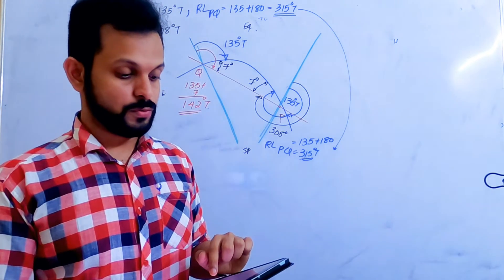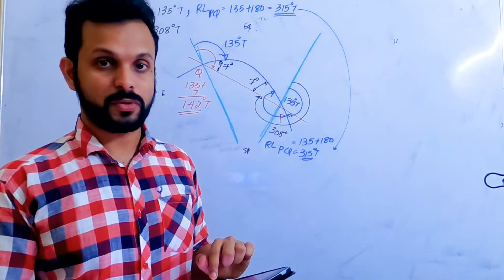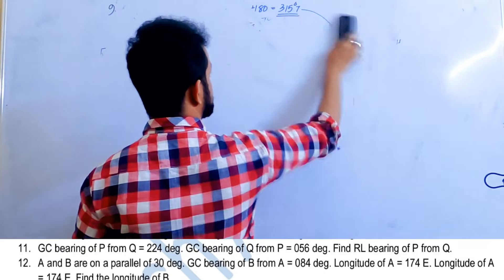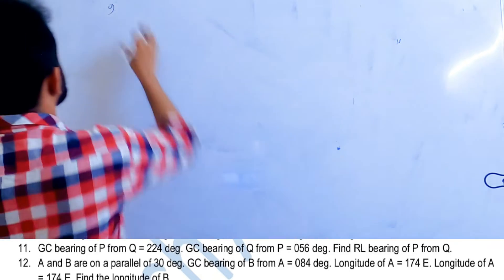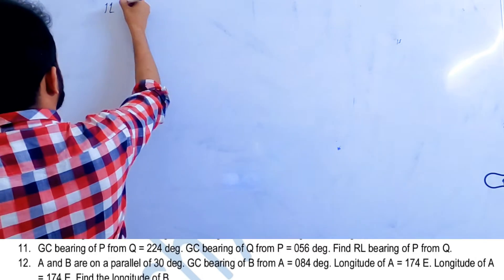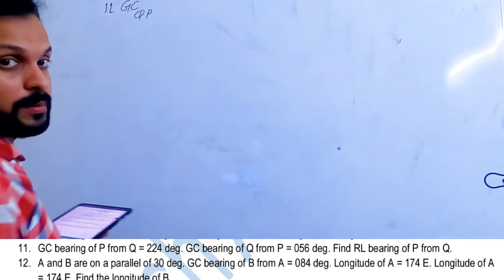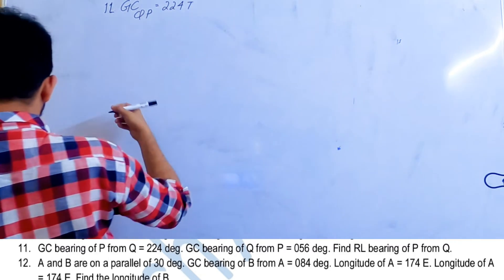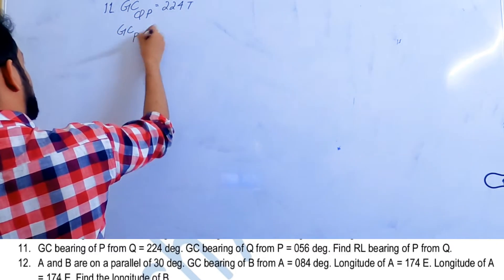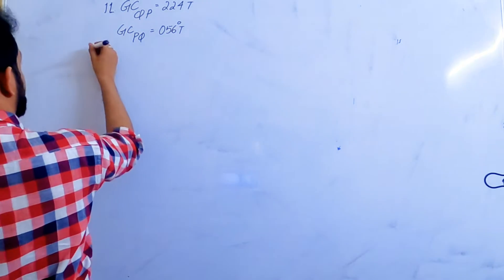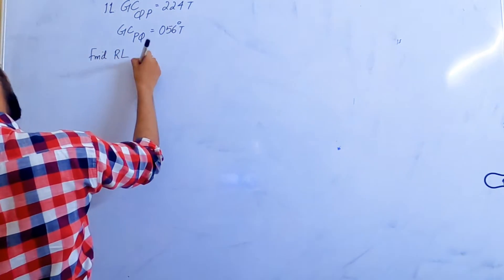Question number 11. Great circle bearing of P from Q is 224 degrees. Great circle bearing of Q from P is 56 degrees. Find the rhumb line bearing of P from Q.